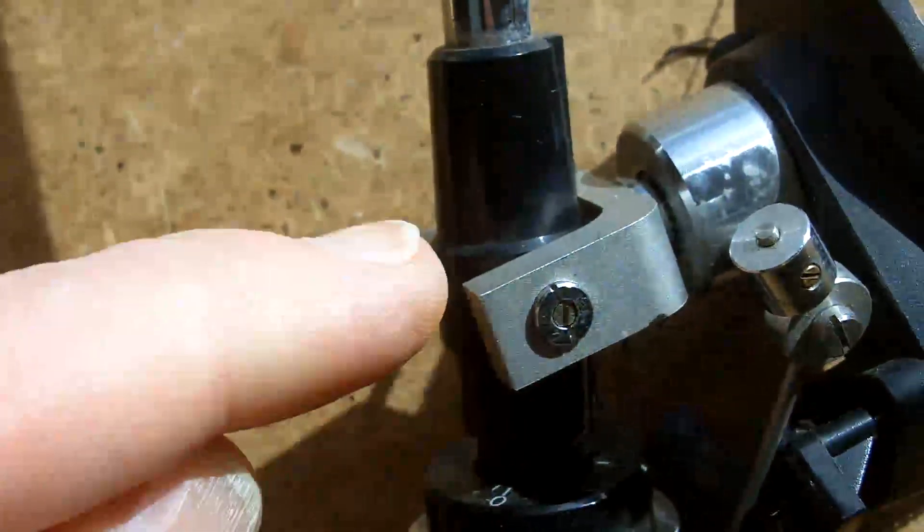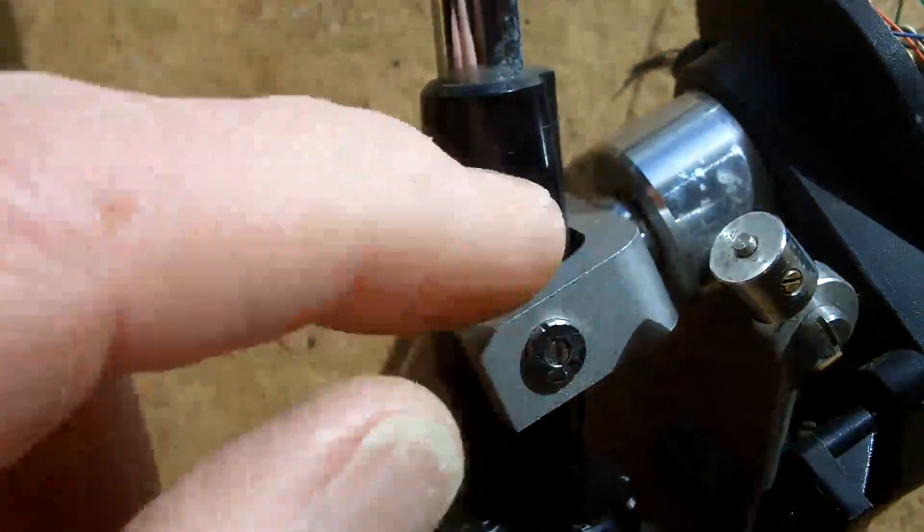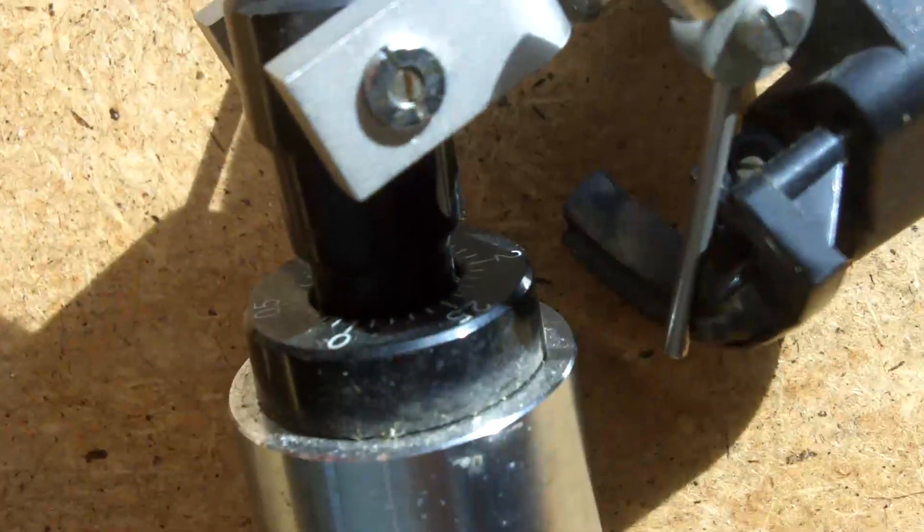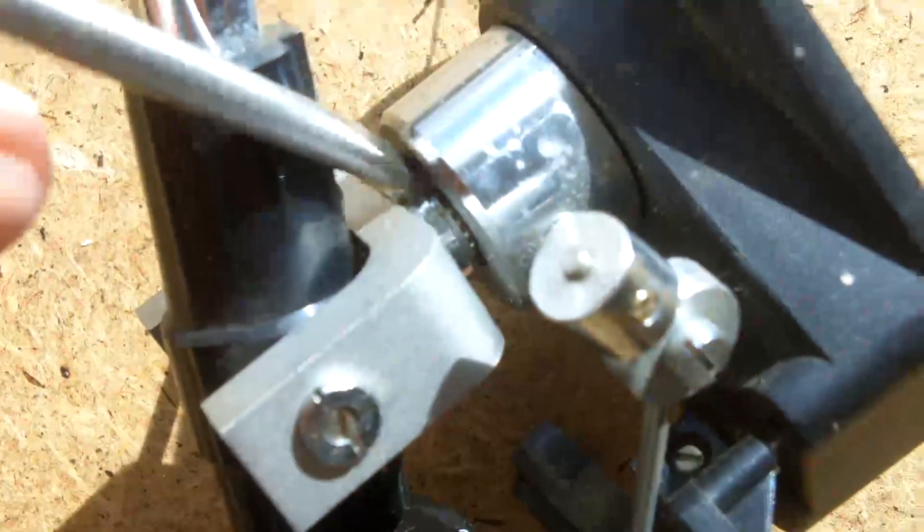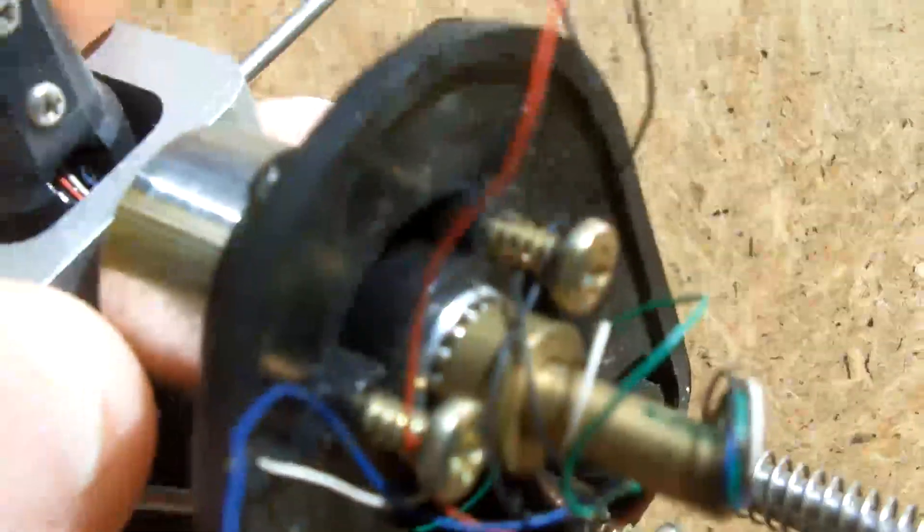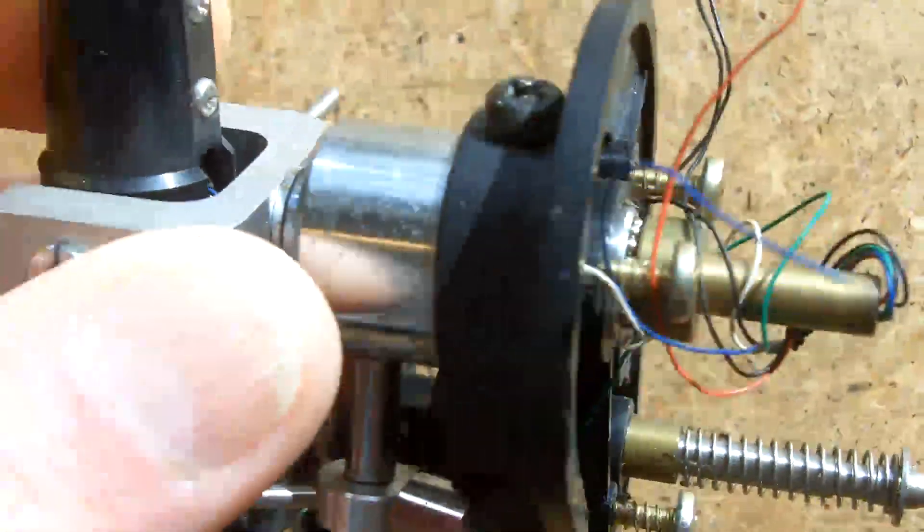So it's got this gimbal here and then it's got a lovely little set of bearings down there. A little ball race in there. And then at the other end of the shaft it's got a corresponding ball race at that end.